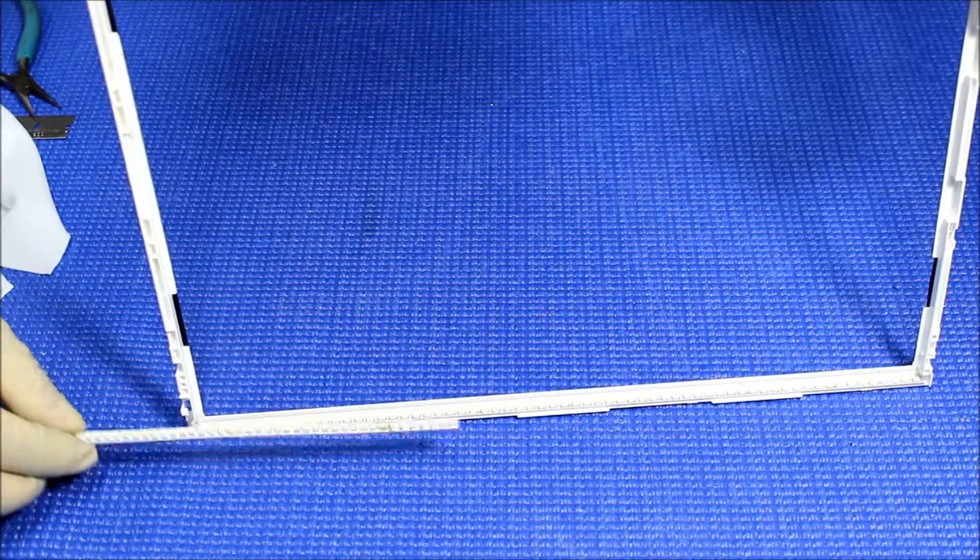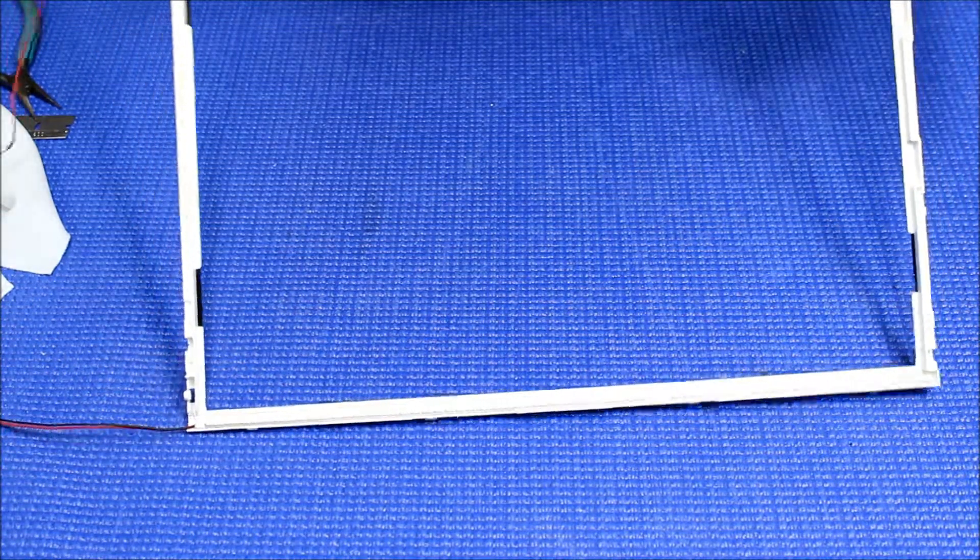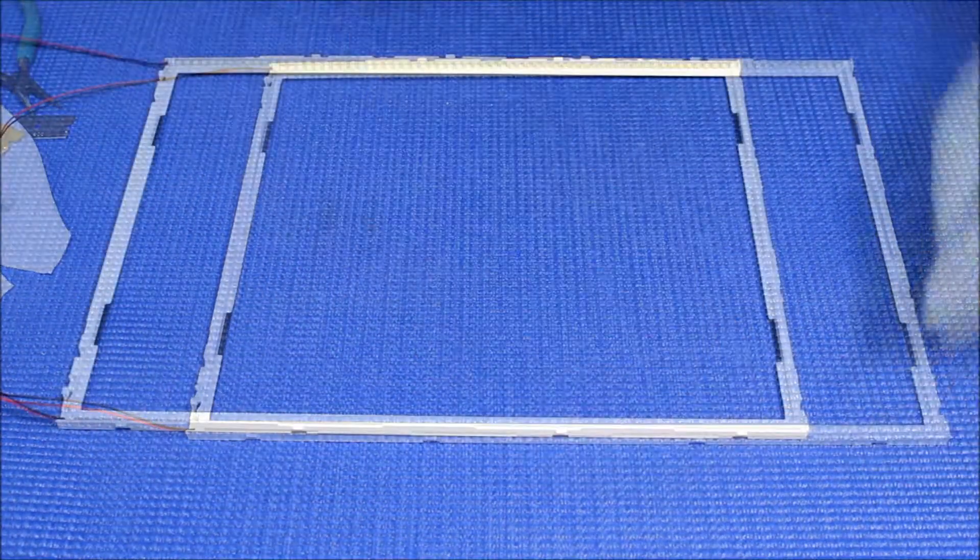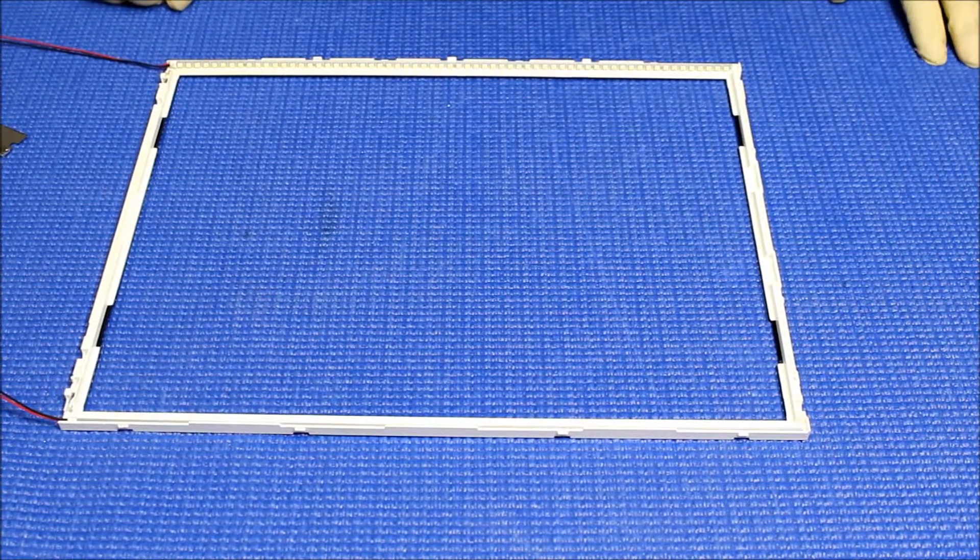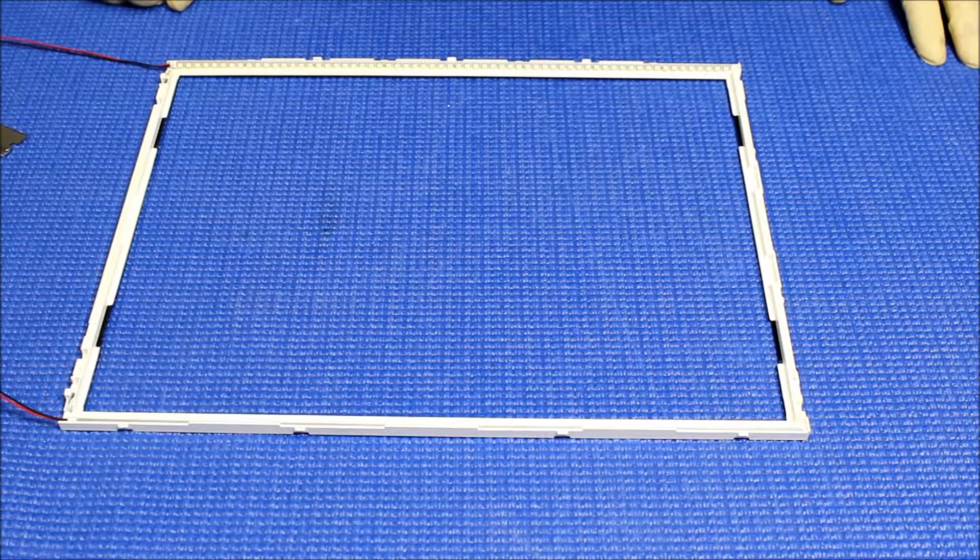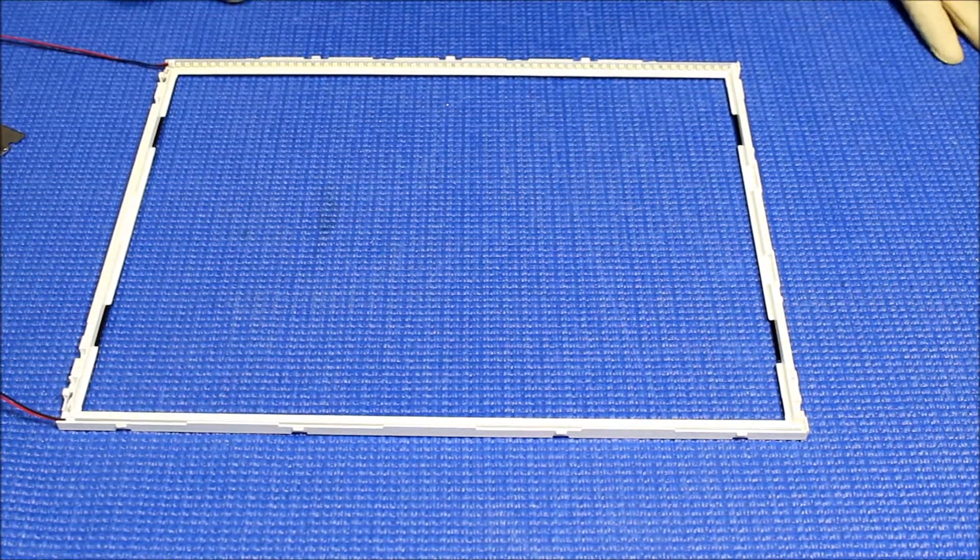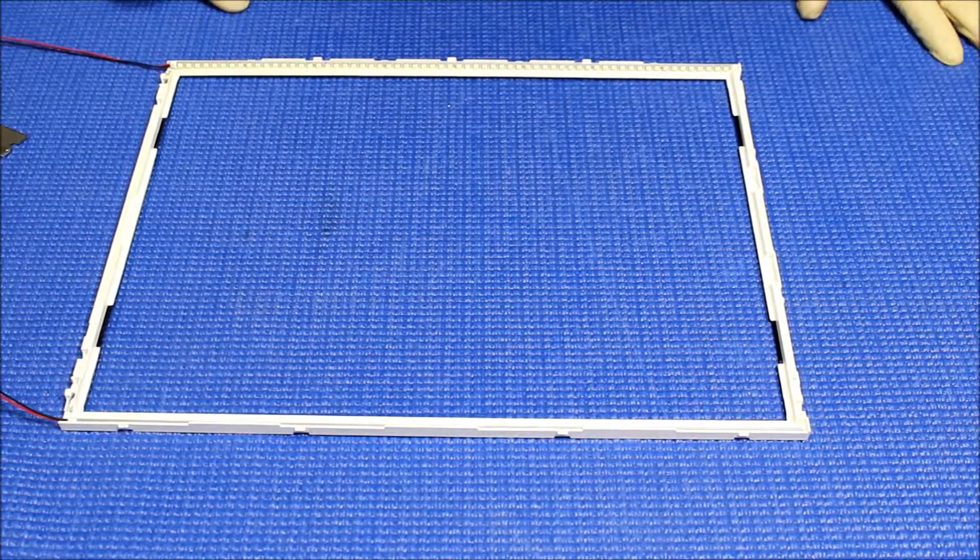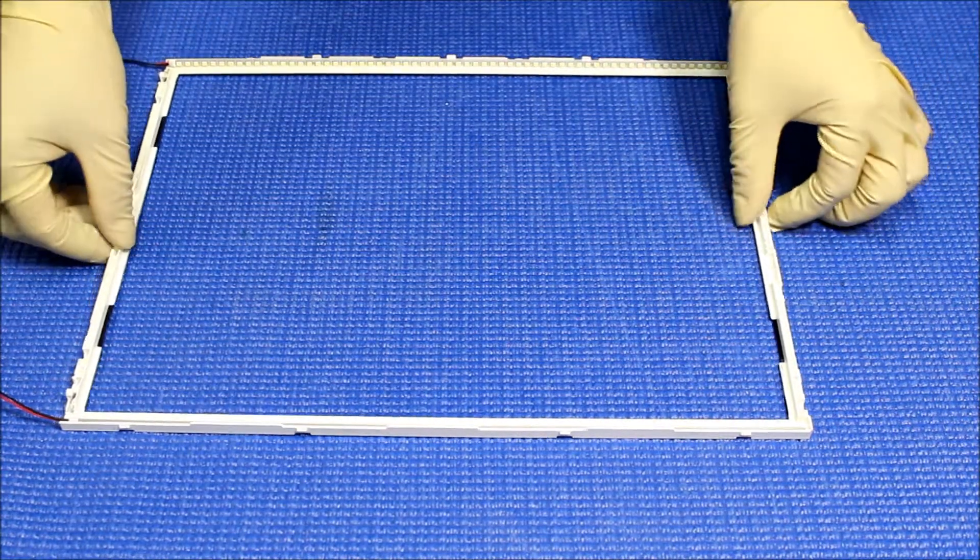Now secure everything. See, the 545 was much thicker, so you'll be perfect for this screen. All right, now we are ready to put the plexiglass back and the diffusion sheet back.